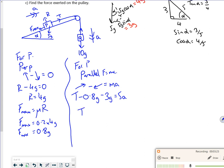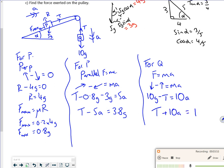So I get T minus 5a equals 3.8g. Let's have a look at Q now. F equals ma. Force in the direction of travel minus force opposing it is mass times acceleration. I've got 10g pulling down minus my tension equals 10a. So T plus 10a equals 10g.